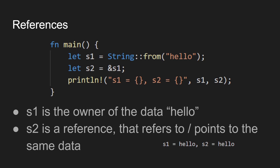Now looking at our program, we've got: let S1 equal to string from hello. And then we say let S2 equal to S1. But notice now we have this ampersand sign in front of it. This is basically saying this is a reference to the same piece of data that is pointed to by S1 — a pointer, really. They call it a reference in Rust; it's the same as a pointer in C. So S1 is the owner and S2 is a reference. When you print out, you get hello, hello.